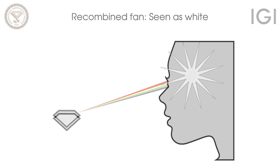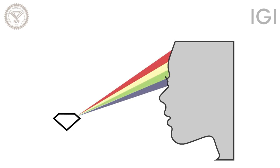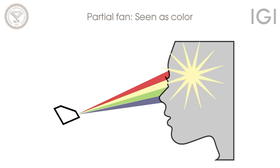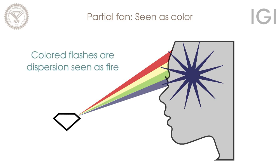But when a fan is large enough that only a portion of it enters the pupil, the brain sees a flash of that color. So colored flashes are dispersion seen as fire.